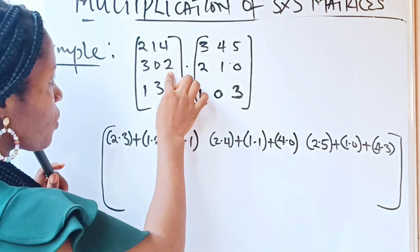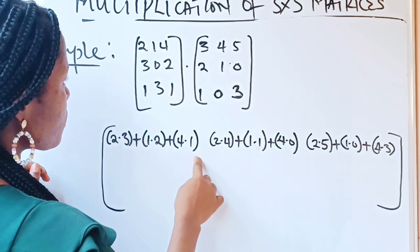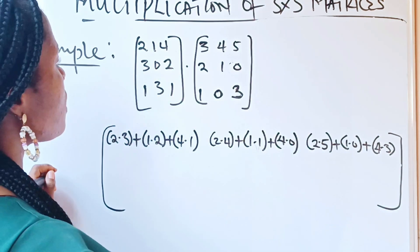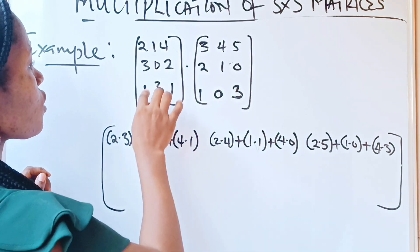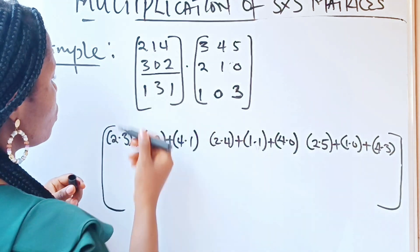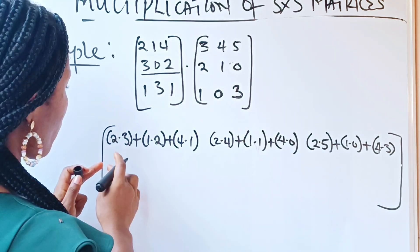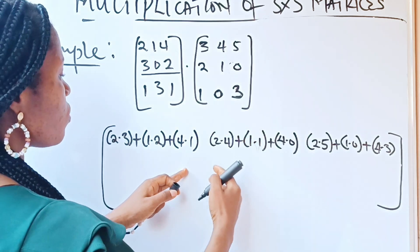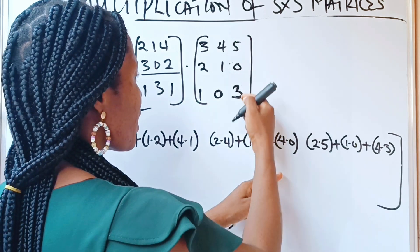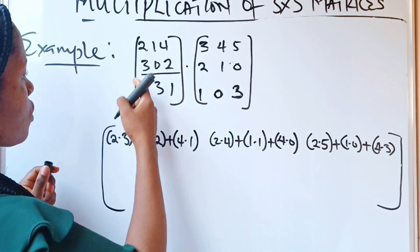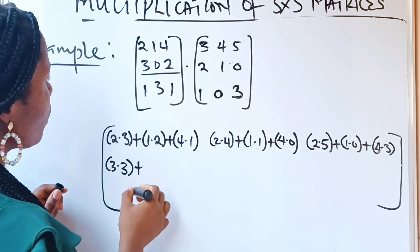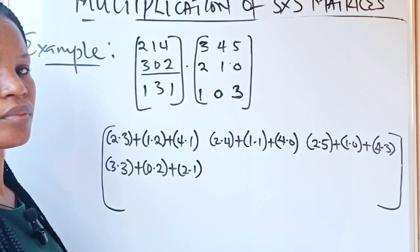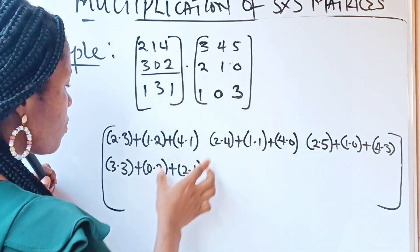Now we start with the second row. We have used the first row to multiply all three columns. So we are through with the first row. We go over to the second row, and we use it to multiply the first column to form the first number of the second row: 3 times 3, plus 0 times 2, plus 2 times 1.